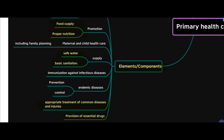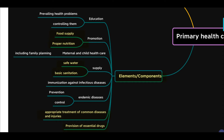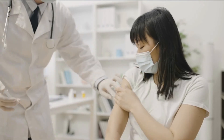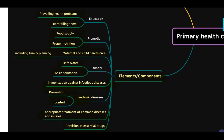Under the preventive component, you have to educate the population about prevailing health problems and the methods of controlling them. Apart from that, primary health care should also include maternal and child health care, which includes family planning. This center should also be able to provide immunization against infectious diseases and prevent and control endemic diseases.